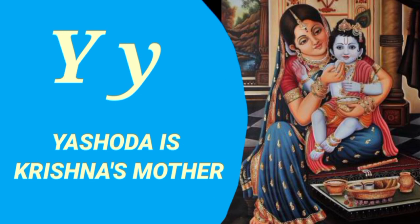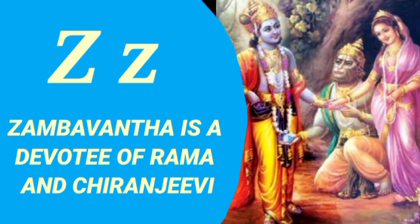Y is for Yashoda, who is Krishna's mother. Z is for Jambavantha, who is a devotee of Rama and a Chiranjeevi.